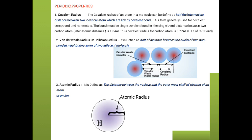The third point is atomic radius. Atomic radius is the distance between the nucleus and the outermost shell electron of an atom or an ion. This distance between the outermost shell electron and the nucleus is called the atomic radius. Atomic radius is a periodic property of the periodic table.